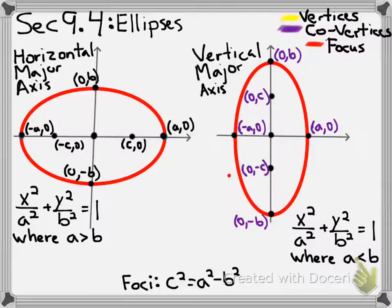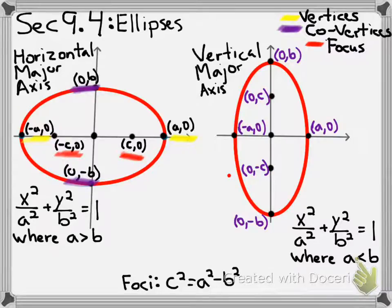Looking at the horizontal ellipse, the vertices are at positive and negative a — we go left and right by the a amount from the x squared over a squared term. The co-vertices go vertically at positive and negative b; they're not the main vertices but we need them to help us graph. The foci, or focuses — we have two — are the c values. We find the foci using c squared equals a squared minus b squared: we square a and b, find the difference, and that gives us c squared.